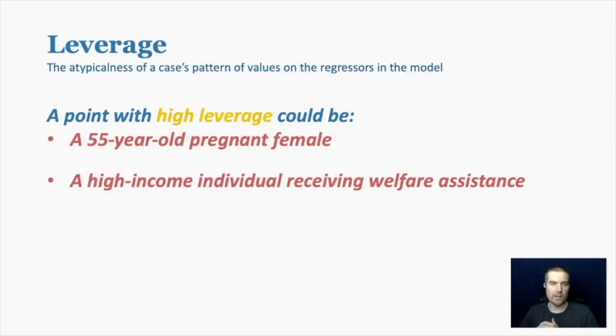First one we want to talk about is leverage. And one way that this is defined is the atypicalness of a case's pattern of values on the regressors of the model. So we're talking about the predictors here. When the predictors combined together are weird compared to other data points in your model.